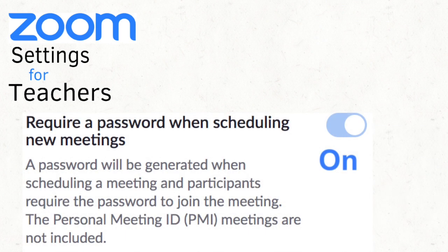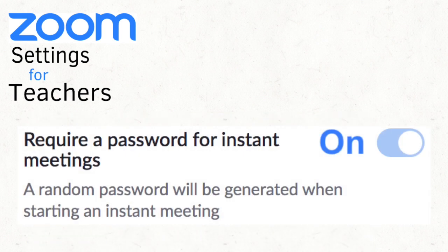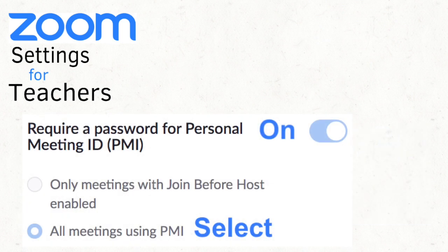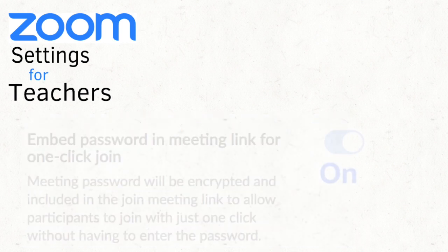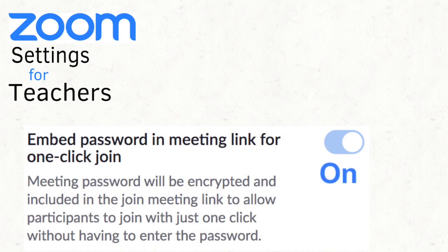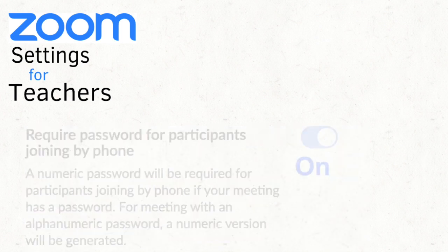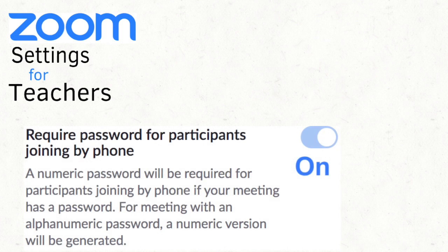Turn on Requiring a Password when scheduling new meetings. Also turn on Require a Password for Instant Meetings. Turn on Require a Password for Personal Meeting and select All Meetings using PMI. To allow for a real easy one-click join, select On for Embedded Password and Meeting Link. Select On to require a password for participants joining by phone.